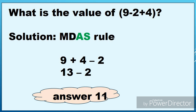Dito sa problem, uunahin natin yung addition since wala yung multiplication at division. So we have 9 plus 4. Then sunod natin yung subtraction, which is 2. 9 plus 4 is 13, then 13 minus 2 is 11.